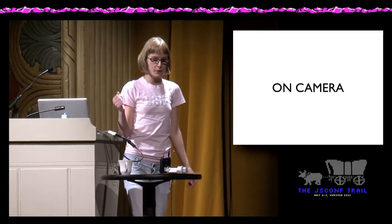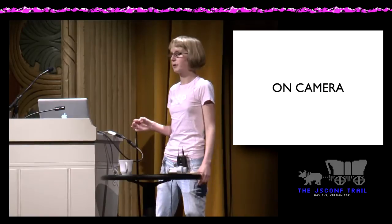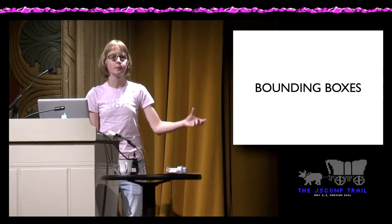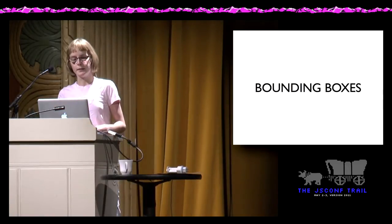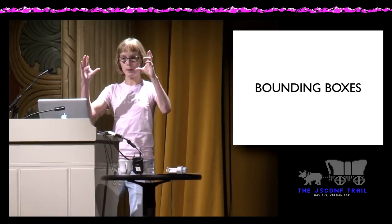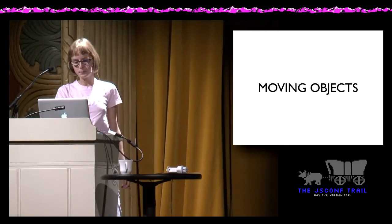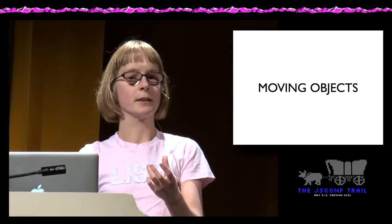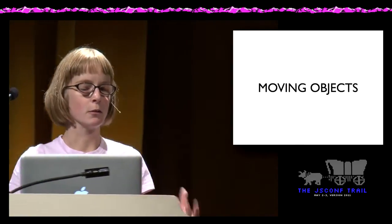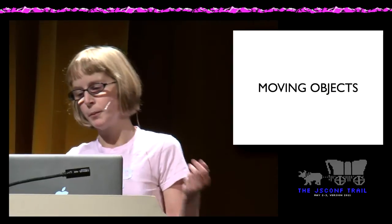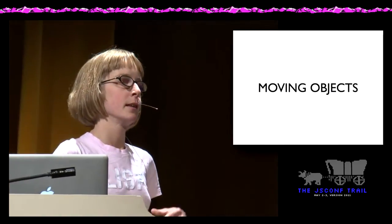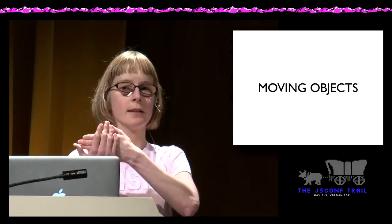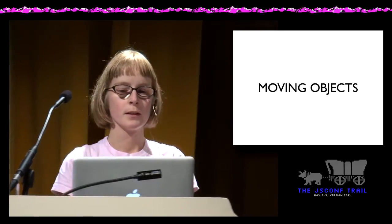With all of this in mind, we can now figure out whether something is on or off camera. The strategy is bounding boxes: all objects have a bounding box, and the camera view is just a single large bounding box in the world. We ask each object: is your bounding box intersecting with the camera's bounding box? If yes, you're on camera; if not, you're off camera. But this check, while not slow, isn't fast enough either, so we need to make it faster.